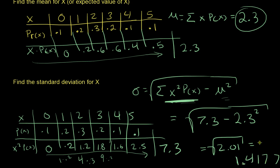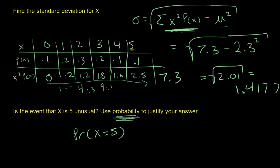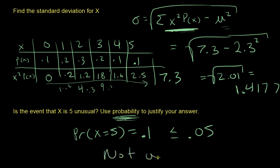Is the event X=5 unusual? Using probability: P(X=5) = 0.1. Unusual events are those with probability less than or equal to 0.05. Since 0.1 is not less than or equal to 0.05, this is not an unusual event.